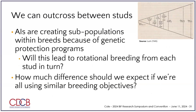There are other things we could do — we could do outcrossing between studs. Some data suggest we're starting to see the different lines in different AI companies differentiating, so maybe you could use Select Sires bulls this year, ABS bulls next year, All West bulls the year after. You could do something like a rotational grading system. I know Select Sires had a product like that several years ago but it didn't get a lot of attention. How much difference would we actually expect from that? Probably not a lot, so it's not really going to solve the problem.